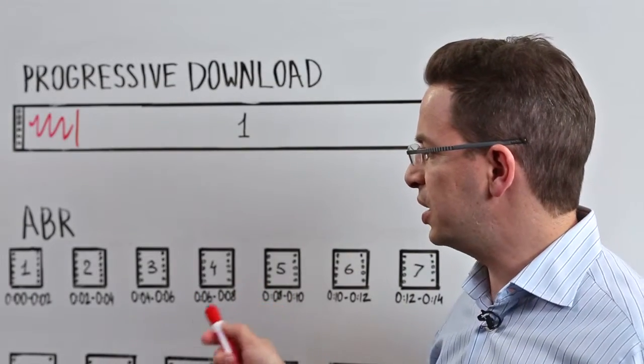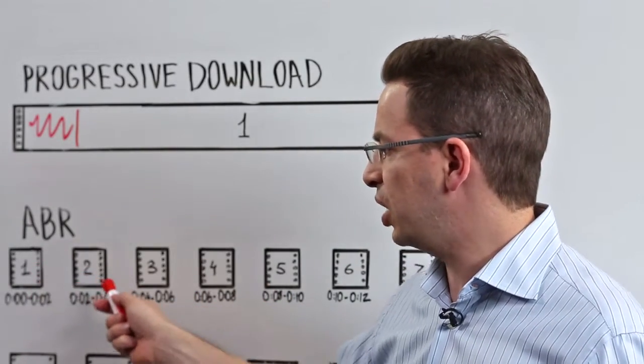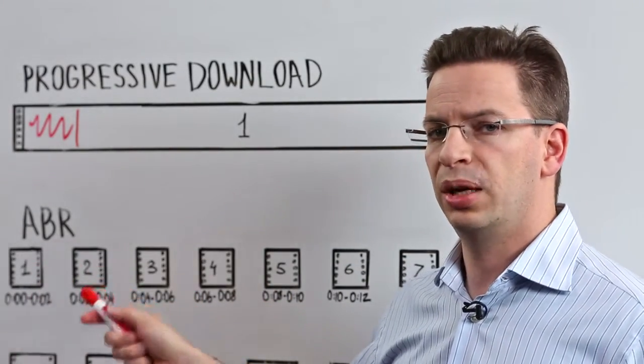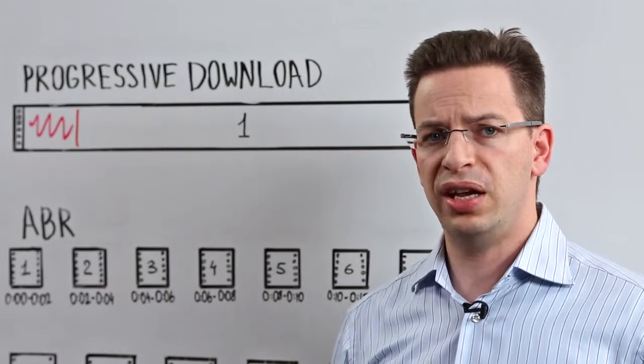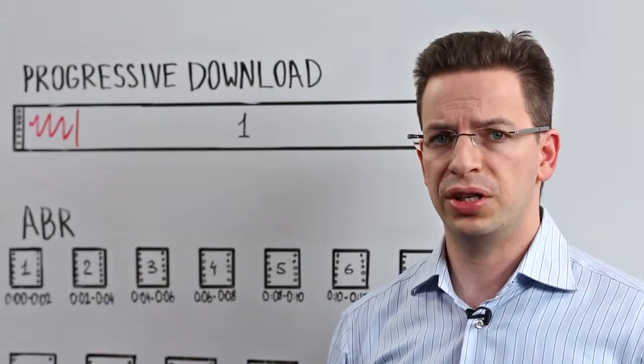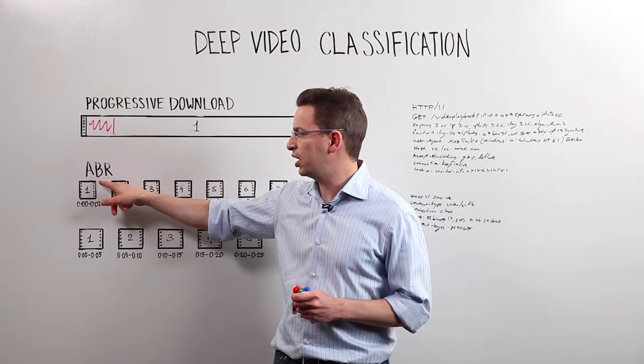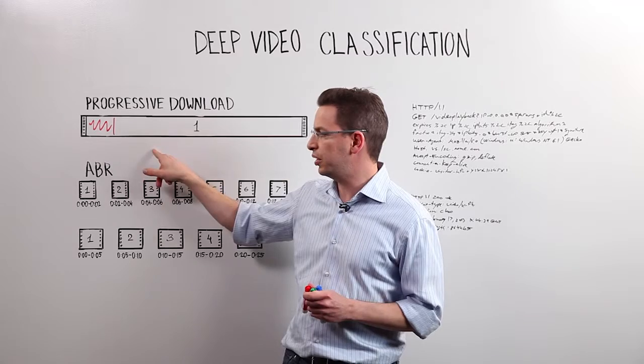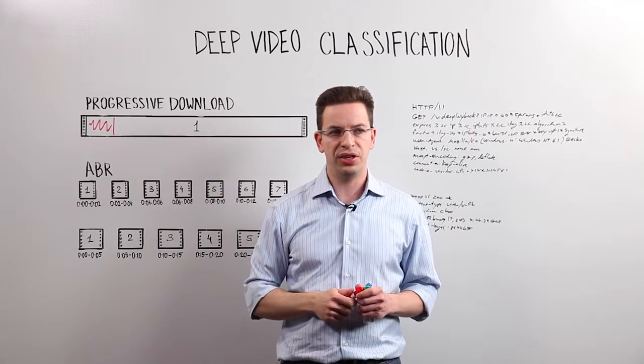The reason why this is done is that the client is actually able to shift in real time between different bitrates. Say if for instance the quality of the line is hampered for some reason, the client can then go from a high definition version to a low definition and then back to high definition again.